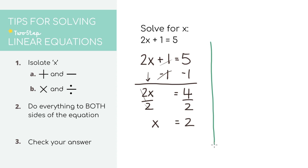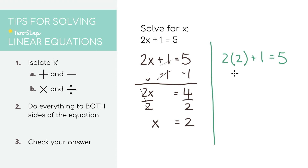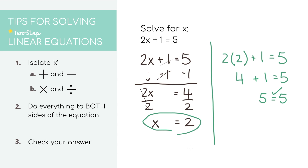Now we're at tip number three — check your answer. This is technically optional but it's a good sanity check. Let's plug in 2 for X in the original equation and we get 2 times 2 plus 1 equals 5, which simplifies to 4 plus 1 equals 5 — and five equals five, so we know we have the right answer. If you end up with something like 3 equals 4 or 10 equals 2, you know you have the wrong answer and need to go back and check your work.